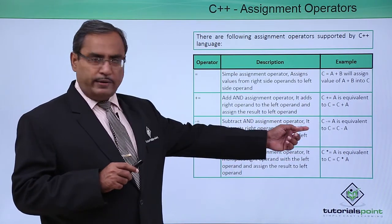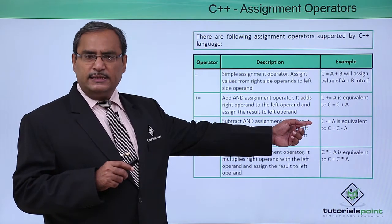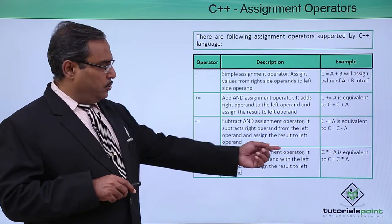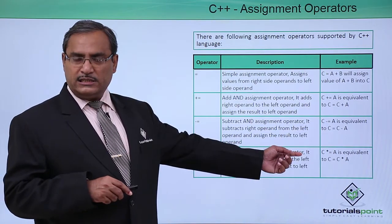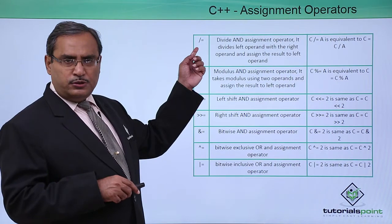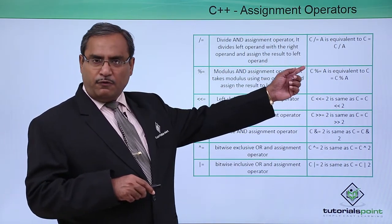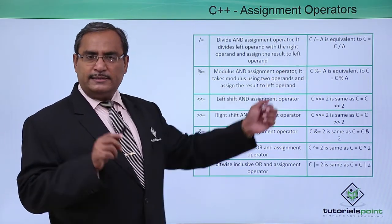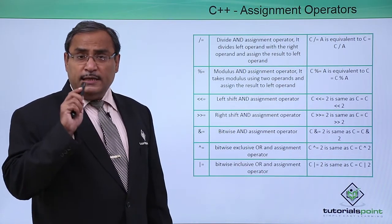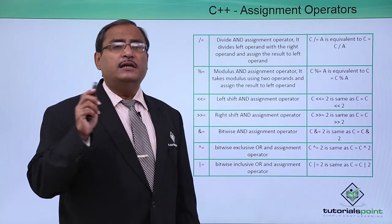For minus-equal-to, C -= A means C is equal to C minus A. We also have star-equal-to and slash-equal-to, with descriptions and examples provided. C /= A means C is equal to C divided by A.